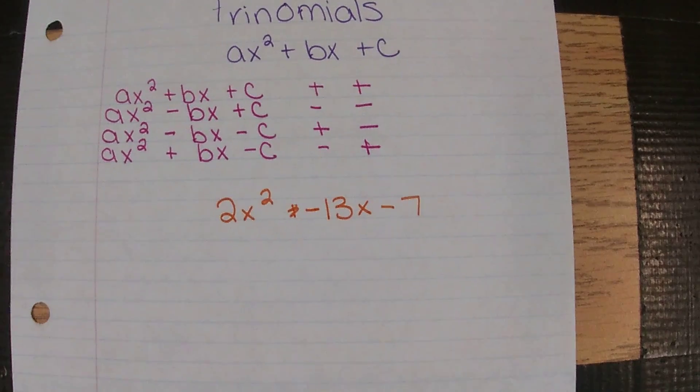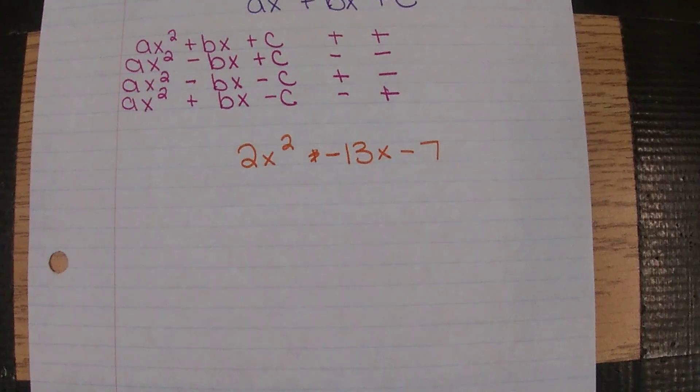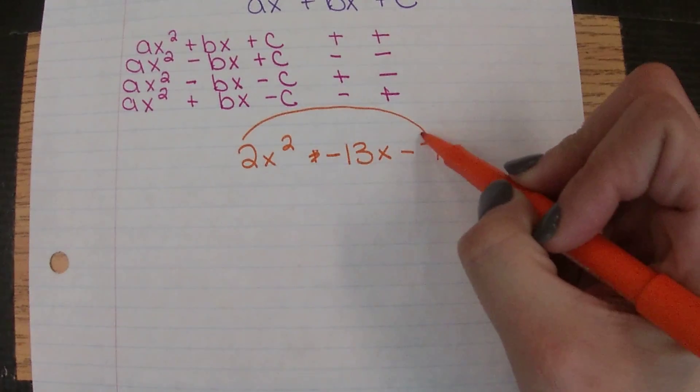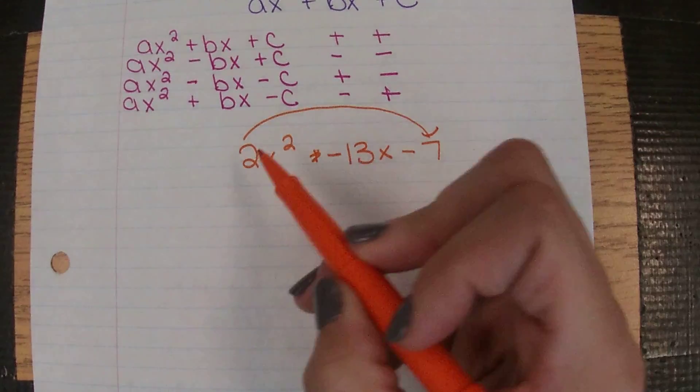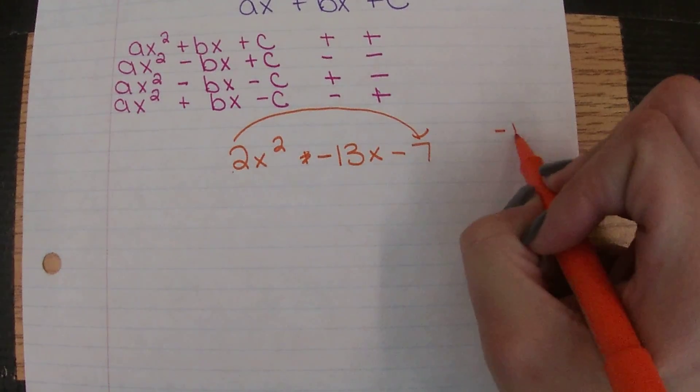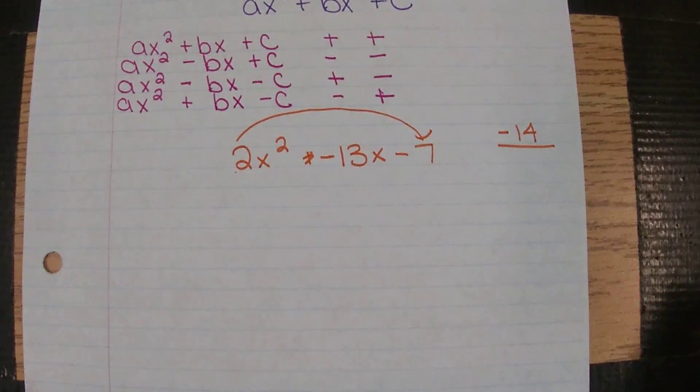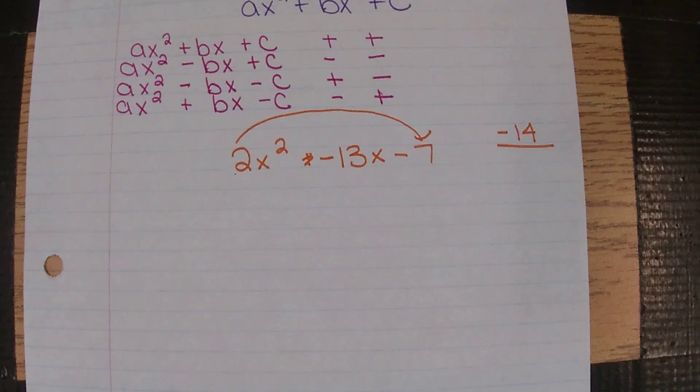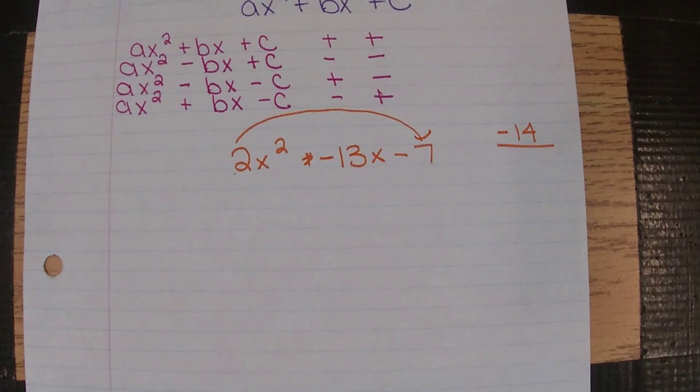So we're still a trinomial, still in that same form as yesterday. Our steps are the same, so we're going to start by multiplying a times c. But now when we multiply, instead of just 2 times 7, we have 2 times negative 7. The problem is that when negatives come into play, instead of just having a factor of 1 and 14 to get negative 14, we have a factor of negative 1 times positive 14 and positive 1 times negative 14. So our list instantly gets twice as long.